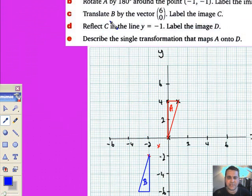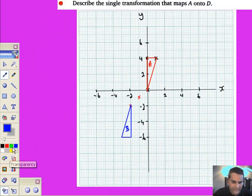I've gone from A to B. I've rotated 180 degrees around the center of rotation (-1,-1) and labeled it B in blue. Now translate this new triangle B using vector (6,0) and label it C.